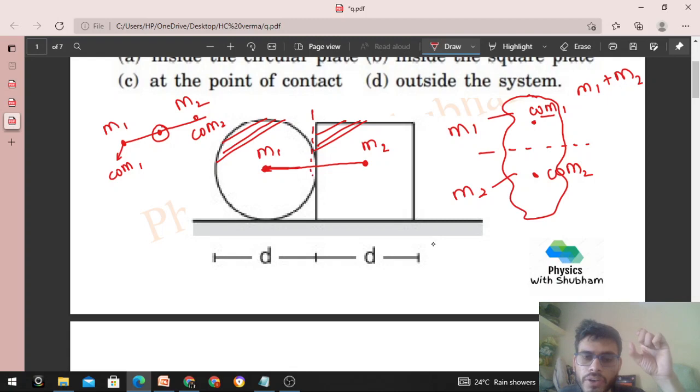So aap in dohno ko join karo, so is line mein kahi lie karega. So hame yeh batana hai ki ye square wali side lie kar raha ya phir circular wali side lie kar raha. So aap dekho, center of mass kaha pere hota hai - nearer to the heavier object. Heavy object kaun sa hooga - jis ka area zyada hooga, kyunki density to dohno ka same. Area kis ka zyada hooga - square plate ka.